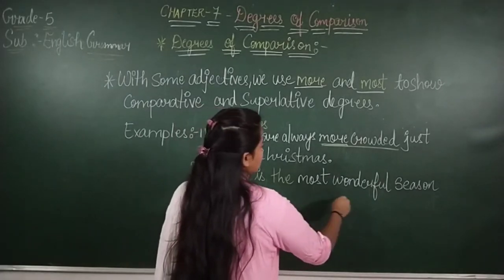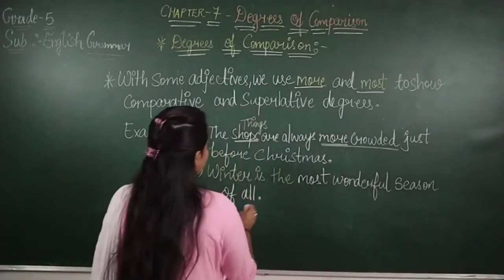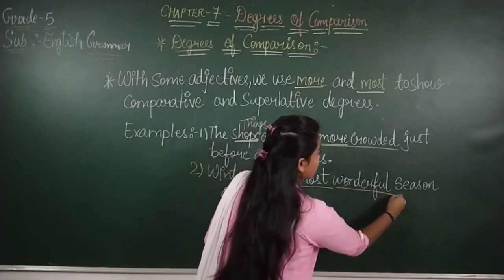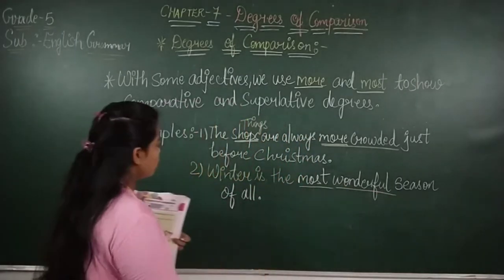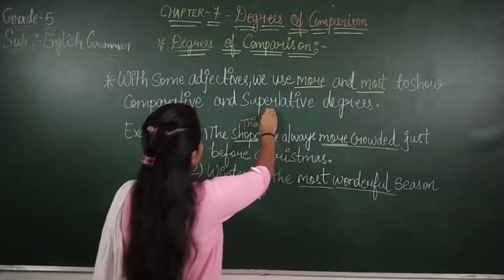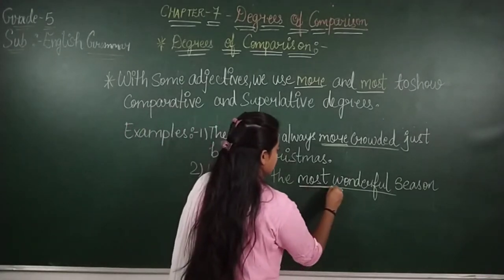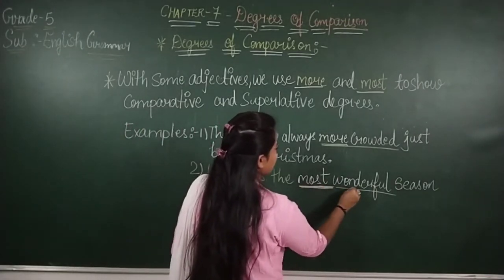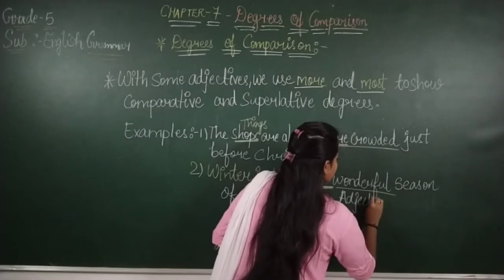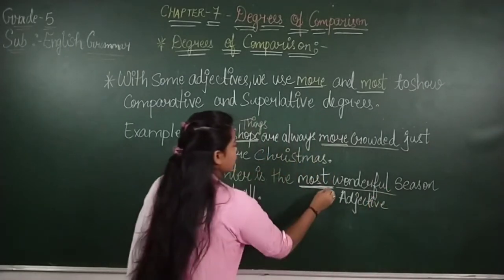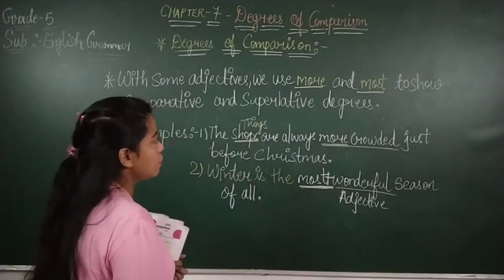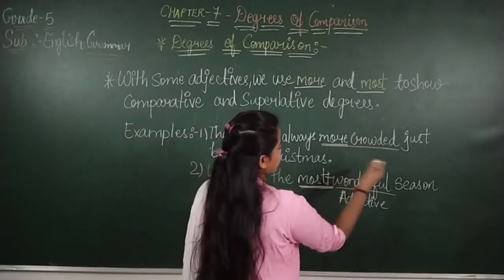Second example: Winter is the most wonderful season of all. Here we use 'most' before the adjective 'wonderful' to show superlative degree. 'Wonderful' is the adjective, and we added 'most' before it. By that we can identify that it is a superlative degree.